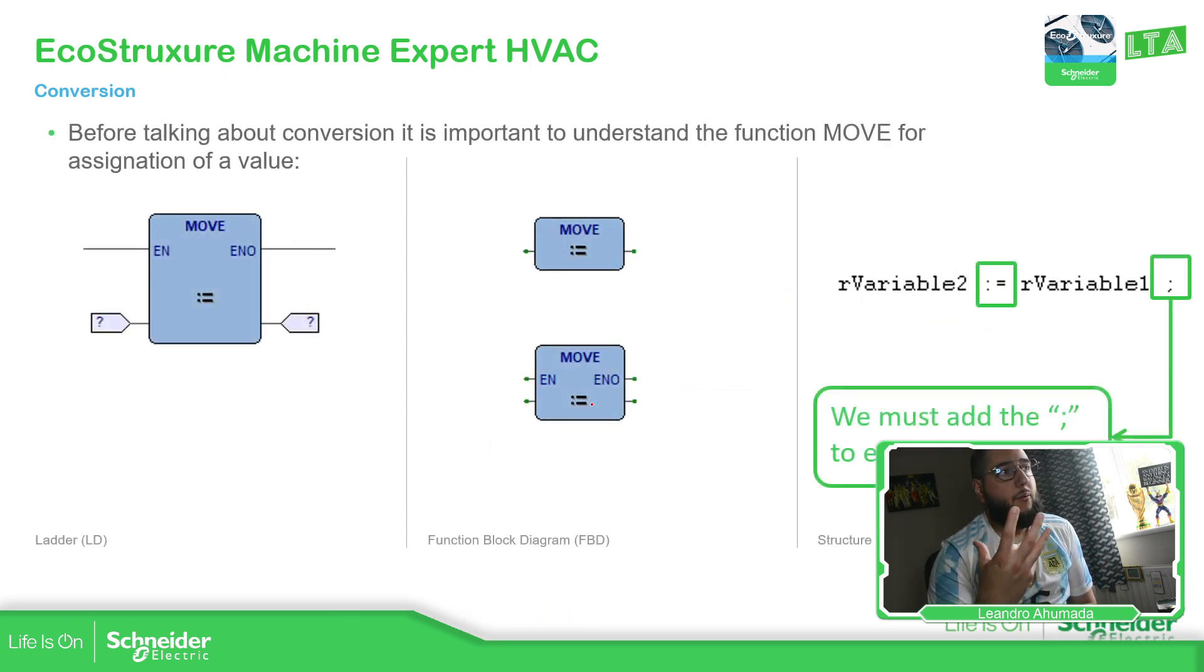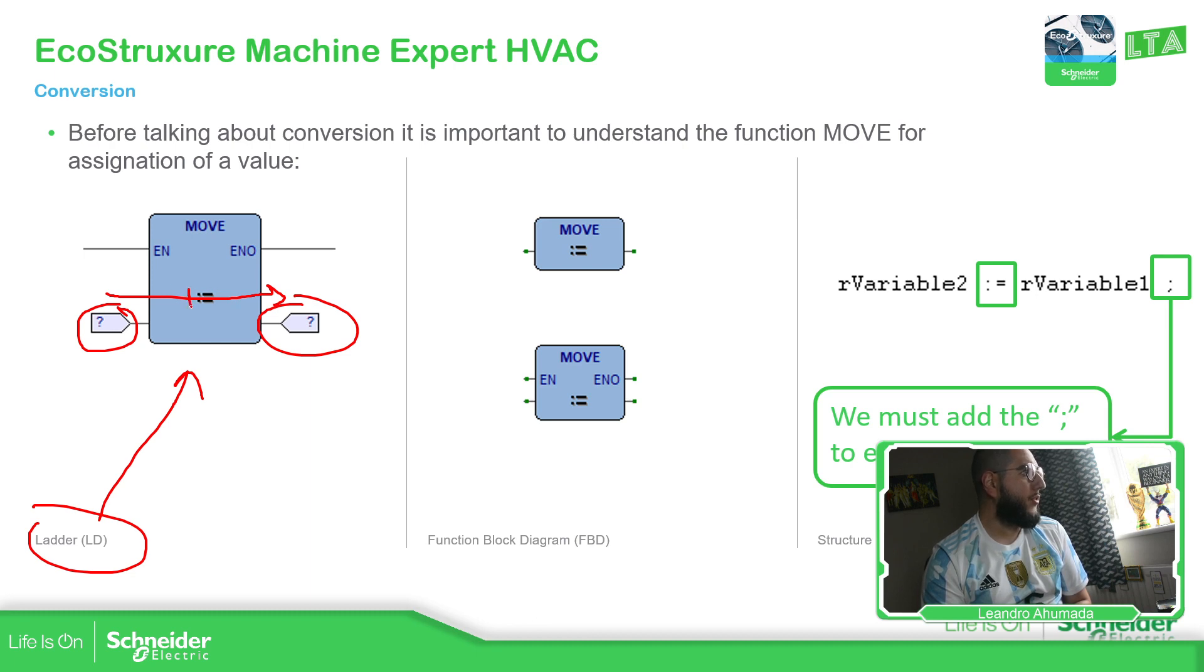Now, depending on the view or the language that we have, we have different visualization of this block. So if we're using ladder, we can see this block. You can see that we have the input and the output. So the value that we put over here, the variable or the value is a constant. You just go to the other one. I'm moving. And you can see here the icon.